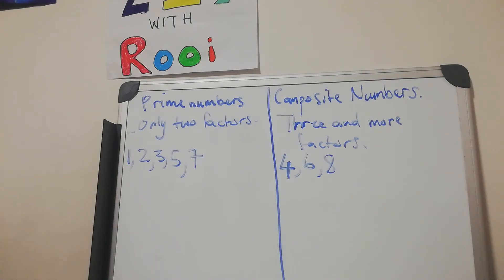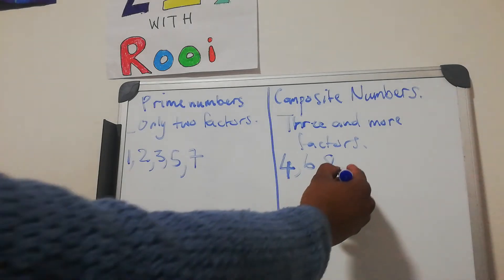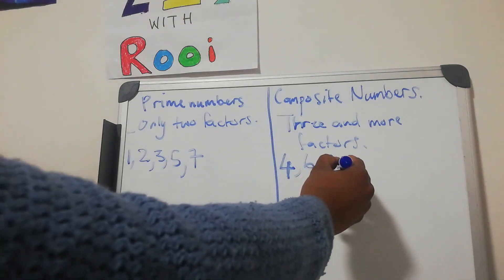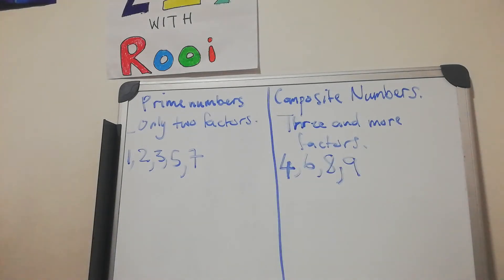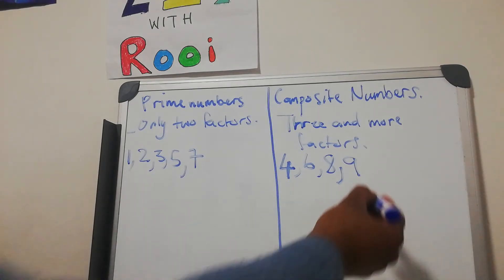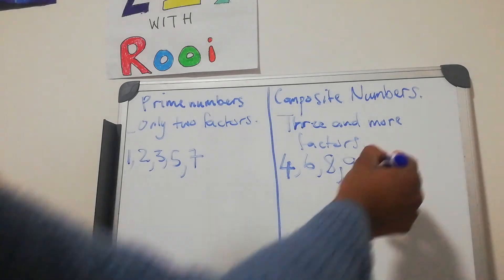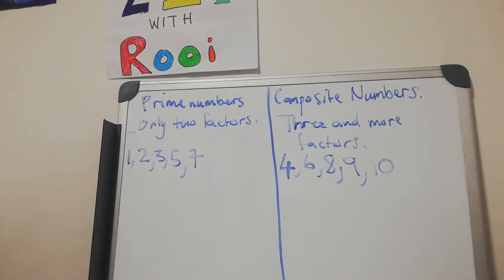Then nine, nine is one, three, and nine. Therefore nine is going to be a composite number. Ten is going to be one, two, five, and ten. That's four factors, it must be a composite number.